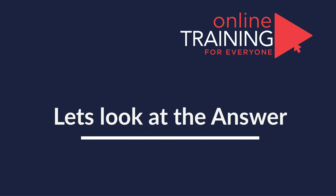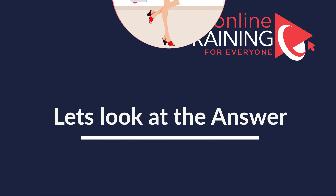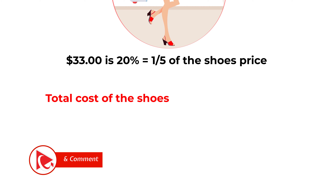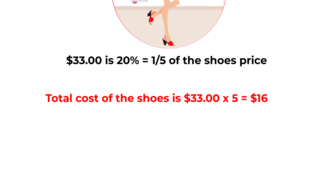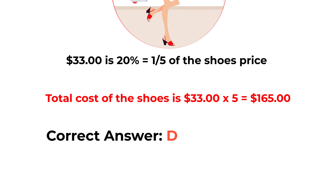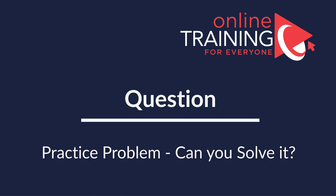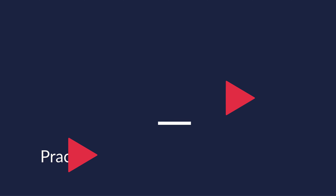The answer is very simple. $33 is 20% — or one-fifth — of the shoe price. So the total cost would be 33 multiplied by 5, which equals $165. The correct answer is choice D, $165.